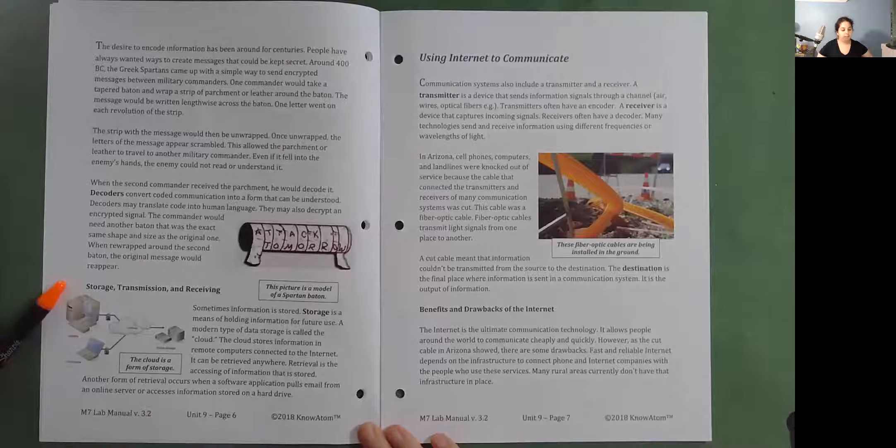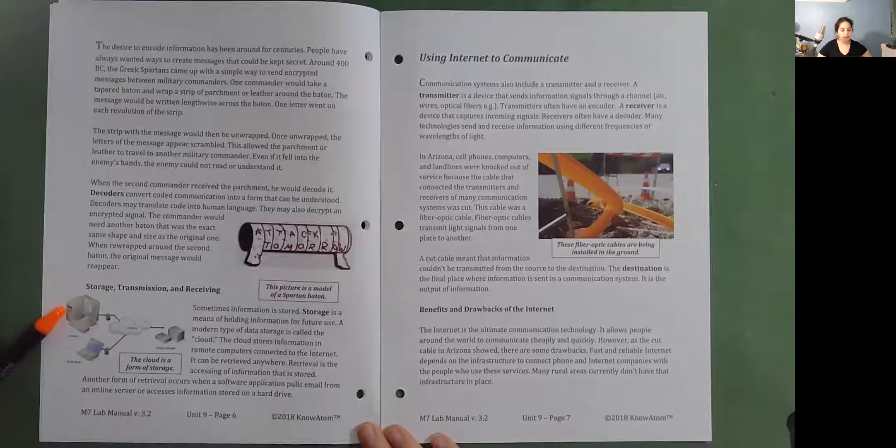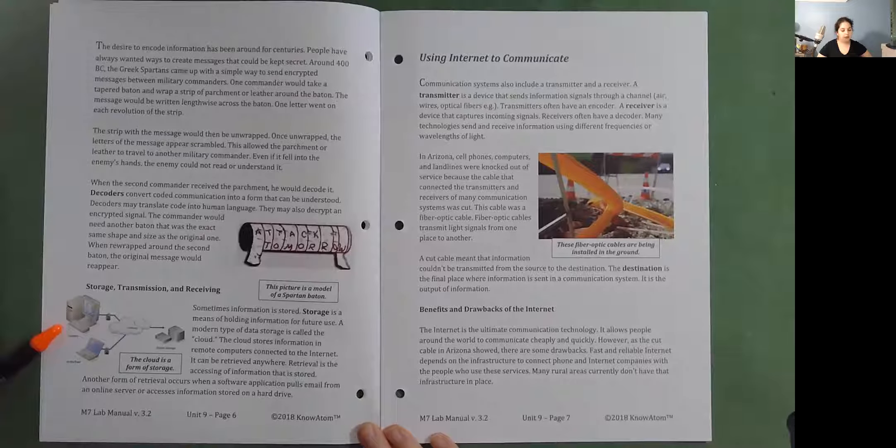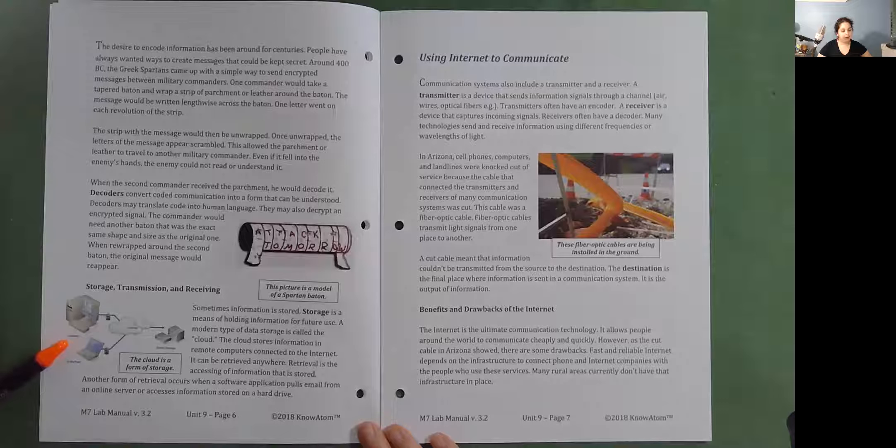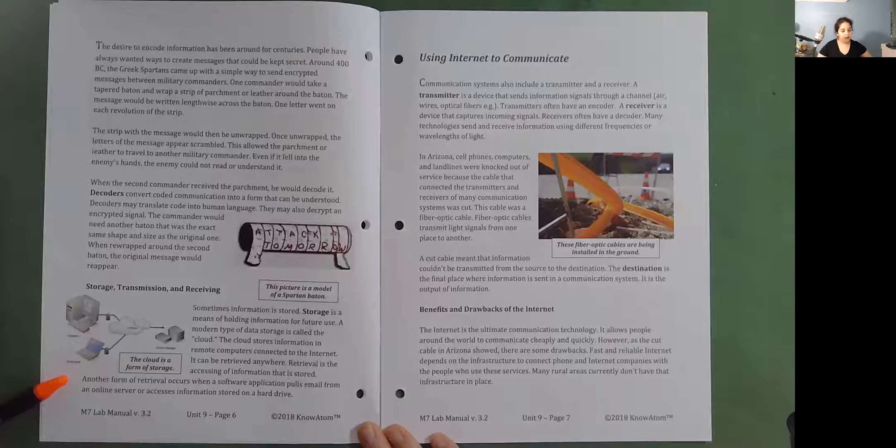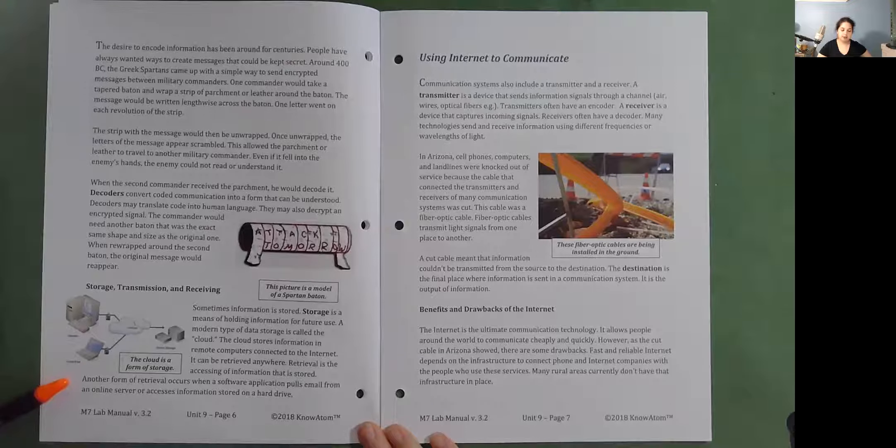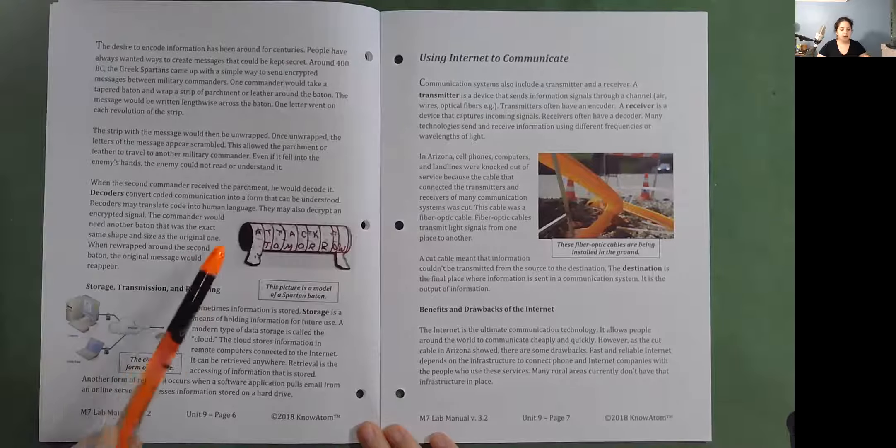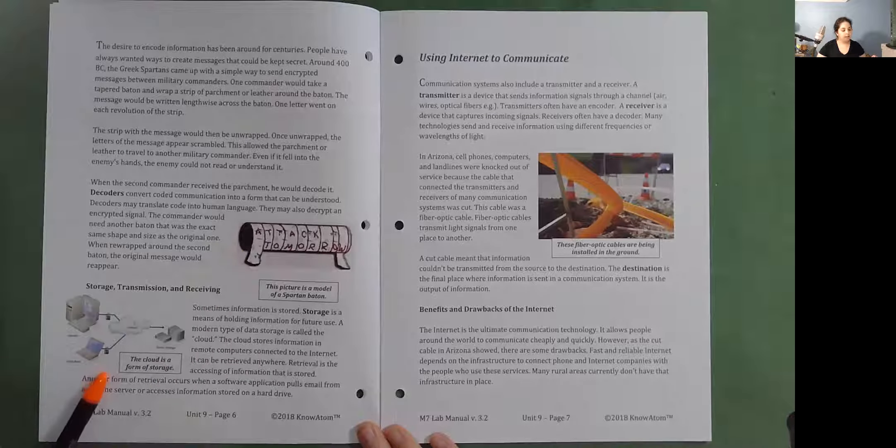Storage, transmission, and receiving. Sometimes information is stored. Storage is a means of holding information for future use. A modern type of data storage is called the cloud. The cloud stores information in remote computers connected to the internet. It can be retrieved anywhere. Retrieval is the accessing of information that is stored. Another form of retrieval occurs when a software application pulls email from an online server or accesses information stored on a hard drive. This picture is a model of a Spartan baton. The cloud is a form of storage.